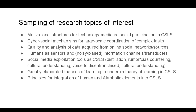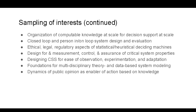How can we think of humans as sensors? What about social media exploitation tools? We need greatly elaborated theories of learning to underpin a theory of human, organizational, and systems learning in cyber social learning systems. We need principles for integrating human and AI robotic elements of systems. The organization of computable knowledge at scale for decision support at scale. Person-in-and-on-the-loop system design. Ethical, regulatory, and legal aspects.